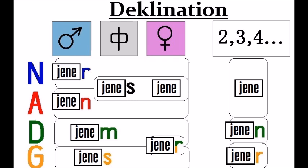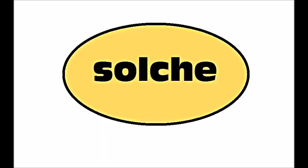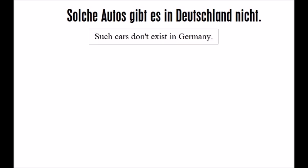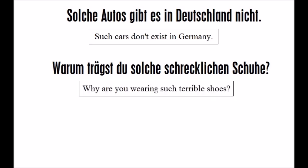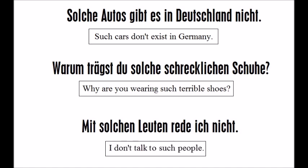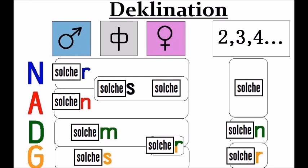The next one is more frequently used. 'Solche' means 'such' — so it means one like the one I'm showing right now. For example: 'Solche Autos gibt es in Deutschland nicht' — such cars don't exist in Germany. 'Warum trägst du solche schrecklichen Schuhe?' — why are you wearing such terrible shoes? 'Mit solchen Leuten rede ich nicht' — I don't talk to such people. The declination works the same as with 'diese' and 'jene': solcher, solches, solche, solchen, solchen.